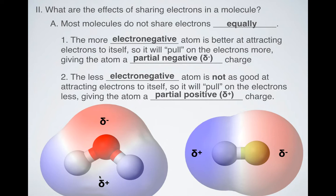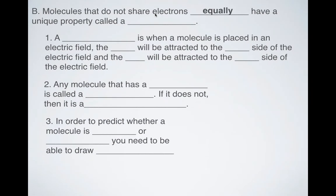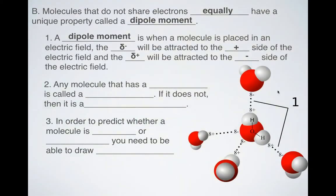So just by looking at these, you can tell the bluer parts here, those are going to be the more positive areas, and the red parts, those are going to be the more negative areas. Now, most molecules, since they don't share electrons equally, they have a unique property, which we call a dipole moment. So a dipole moment is when a molecule is placed inside of an electric field, you have the partial negative charges attracted to the positive side of your electric field and the partial positive attracted to the negative side of your electric field. And so any molecule that has a dipole moment is called a polar molecule. If it doesn't, then it's called a nonpolar molecule.